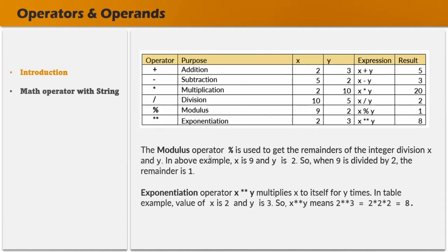The modulus operator gives you the remainder of the division of two numbers. For example, if we use the modulus operator on x and y, where x is 9 and y is 2, when we divide 9 by 2, the remainder is 1. So that 1 will be returned by this modulus operator.